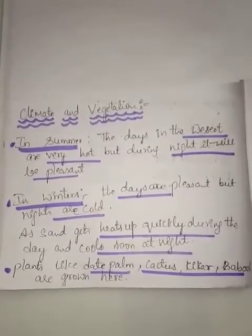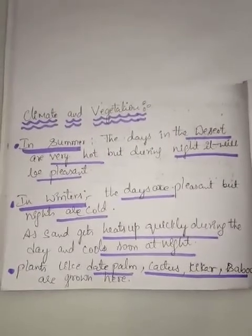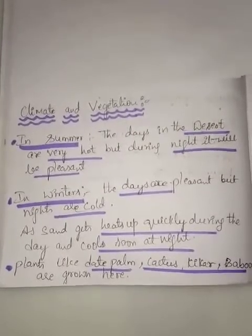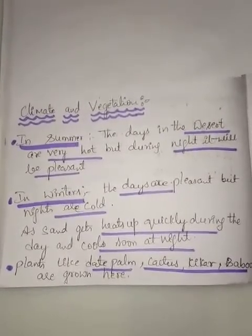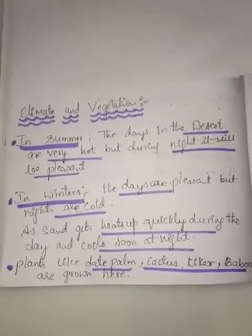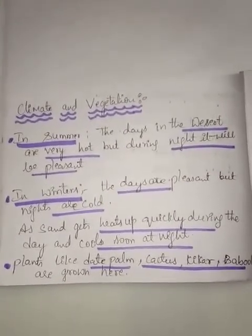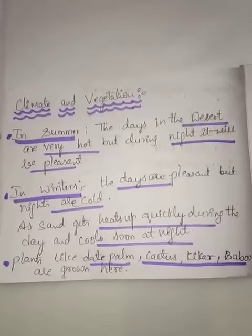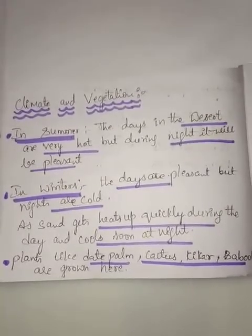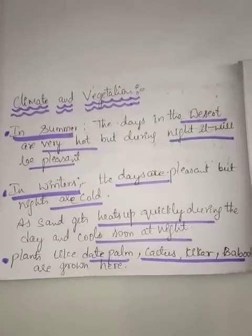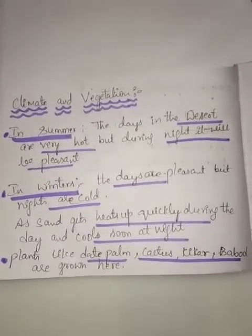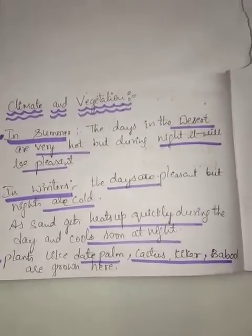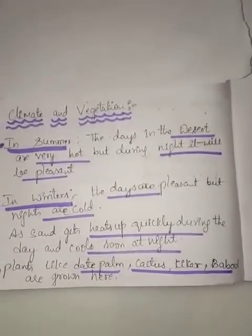Due to the extreme climatic conditions in the desert, the days are very hot and the nights are cold. The desert area is very dry because it receives very little or no rainfall, so sandstorms are common. As sand moves from one place to another due to strong winds, small hills of sand called dunes are formed. Due to less rainfall, only plants that require less water — like date palm, cactus, khejri, and babul — are grown here.